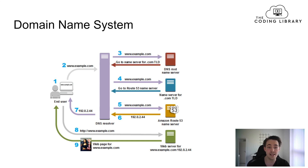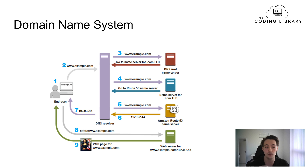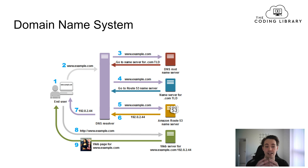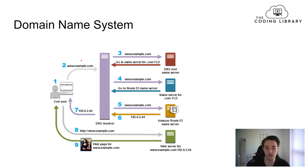We also have the Domain Name System. When you want to access a website, you type in a domain name like Google or YouTube, but the computer doesn't know what that domain is. We need a way to convert from the domain name to an IP address, because everything under the hood on the internet is just an IP address. So when an end user types in a domain name, we first go to a DNS resolver to find the IP address for that domain.